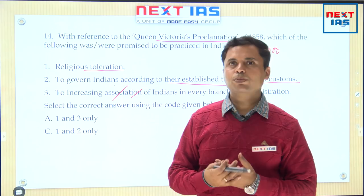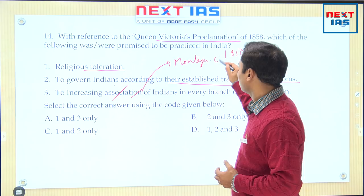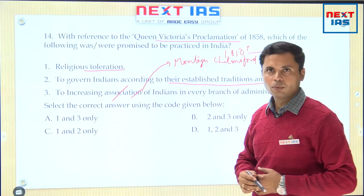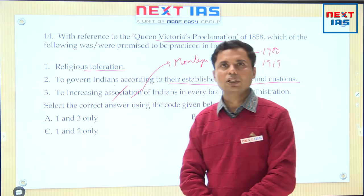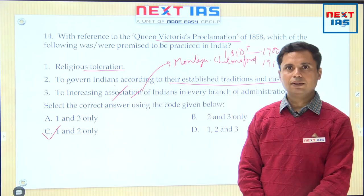Governing Indians according to their established customs was also promised — the government decided to focus on political affairs rather than social and religious customs. However, 'increasing association of Indians in every branch of administration' is not correct — this would lead to responsible government, and the process towards responsible government starts after the Montagu-Chelmsford Reforms of 1919. So third is incorrect, first and second are correct — answer is C for question number 14.